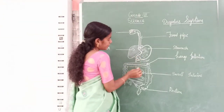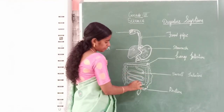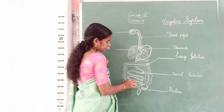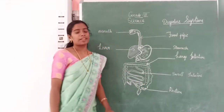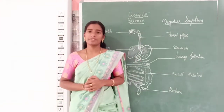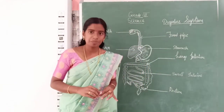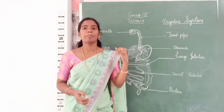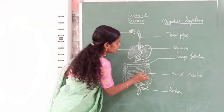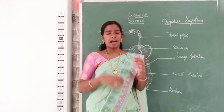From the stomach, the smaller substances enter into the small intestine. In the small intestine, when the broken food enters, the blood takes all the nutrients — like calcium, protein, vitamins, etc. — from this food. The small intestine gives the nutrients to the blood, and the blood absorbs all the nutrients from the digested food.